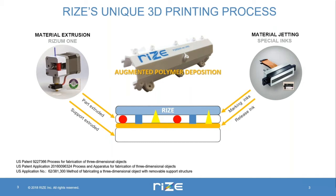Once the support has achieved the proper shape for each cross section, release ink is applied to the support where it will transition into model material. Model material is then extruded on top, and between each layer of extruded thermoplastic model material we can jet different functional inks — for example, color inks which can achieve the full spectrum of color on a single part. We have two printer types: the RIZE One, which has release ink and blue marking ink, and the newer X-RIZE, which adds CMYK colored inks for a full spectrum of color.